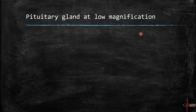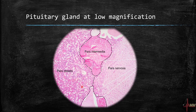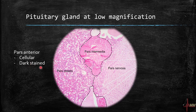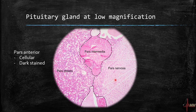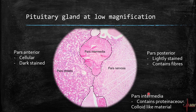Here is the pituitary gland at low magnification. The anterior pituitary — also called adenohypophysis or pars distalis — is more cellular and darkly stained compared to the posterior pituitary. The posterior pituitary, called neurohypophysis or pars nervosa, is lightly stained and contains unmyelinated neuronal fibers. The intermediate part, pars intermedia, contains proteinaceous colloid-like material, which is why it has little function in human beings.